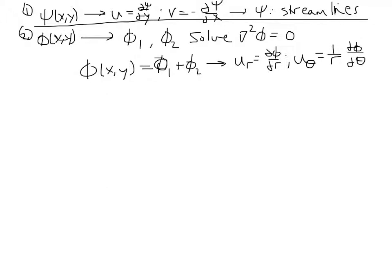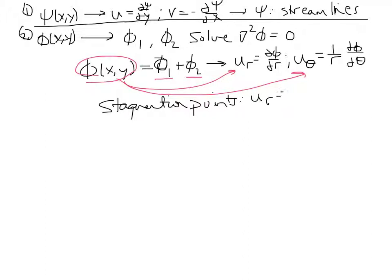Given two functions that do satisfy Laplace's equation, you can combine them to define a new velocity potential, and from that define the velocities that would be associated with that solution. Finally, stagnation points occur wherever u r and u theta are both zero. So both velocity components have to be zero.